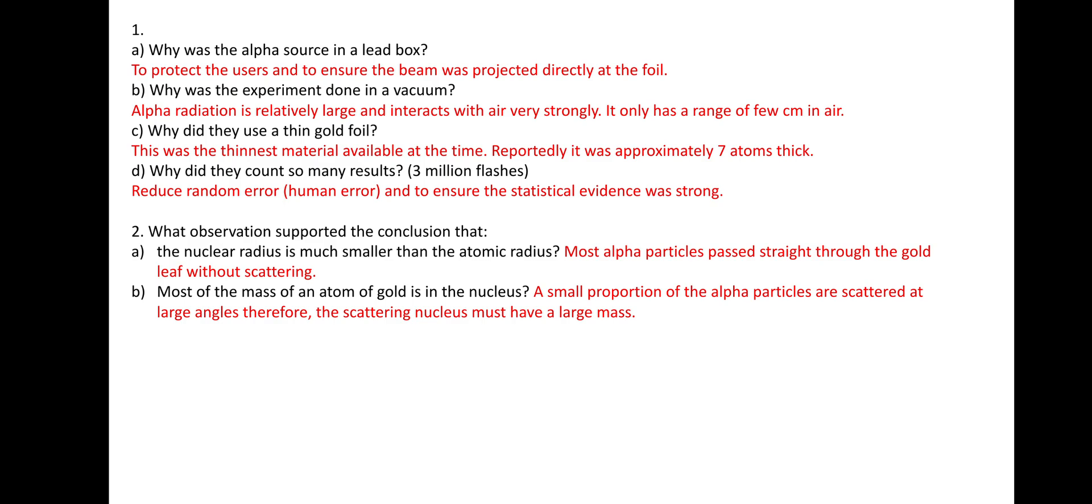Part B. Most of the mass of an atom of gold is in the nucleus. A small proportion of the alpha particles are scattered at large angles. Therefore, the scattering nucleus must have a large mass. And coincidentally, the nucleus will hold approximately 99.9% of the mass of the atom.